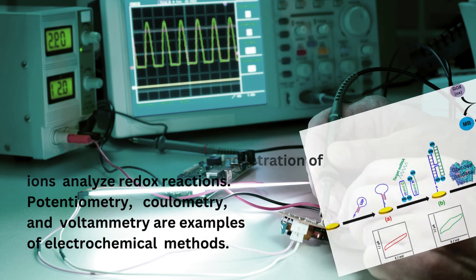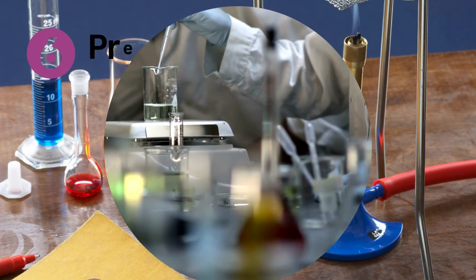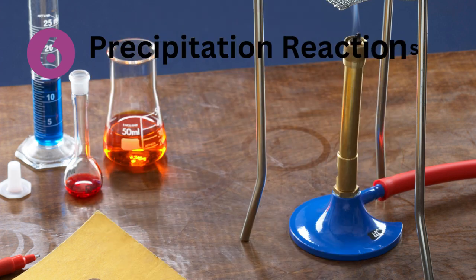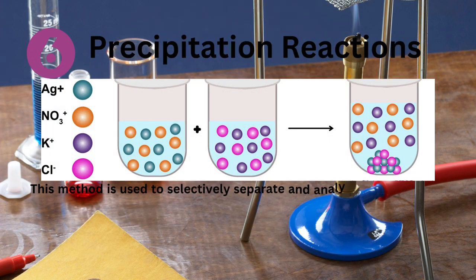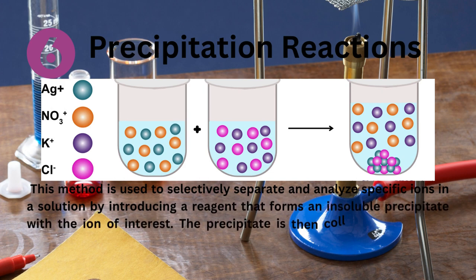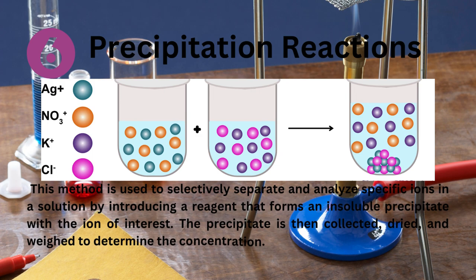Precipitation reactions: This method is used to selectively separate and analyze specific ions in a solution by introducing a reagent that forms an insoluble precipitate with the ion of interest. The precipitate is then collected, dried, and weighed to determine the concentration.